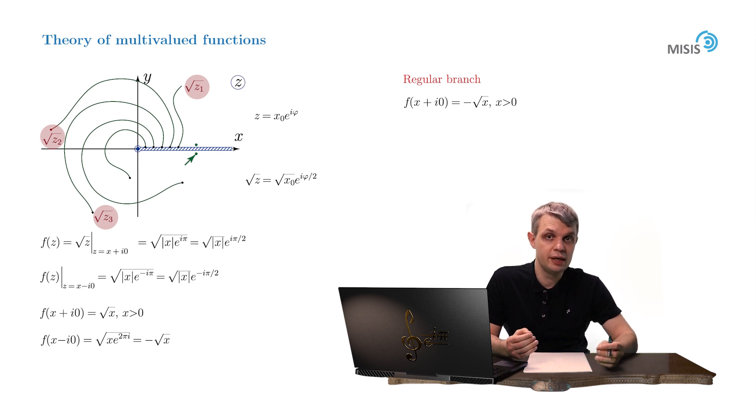and making analytic continuation along these contours, we also build a single-valued function. But it will be a different function. At each point, its value will differ in sign from the previous function. And they say we determine a second regular branch of the square root.